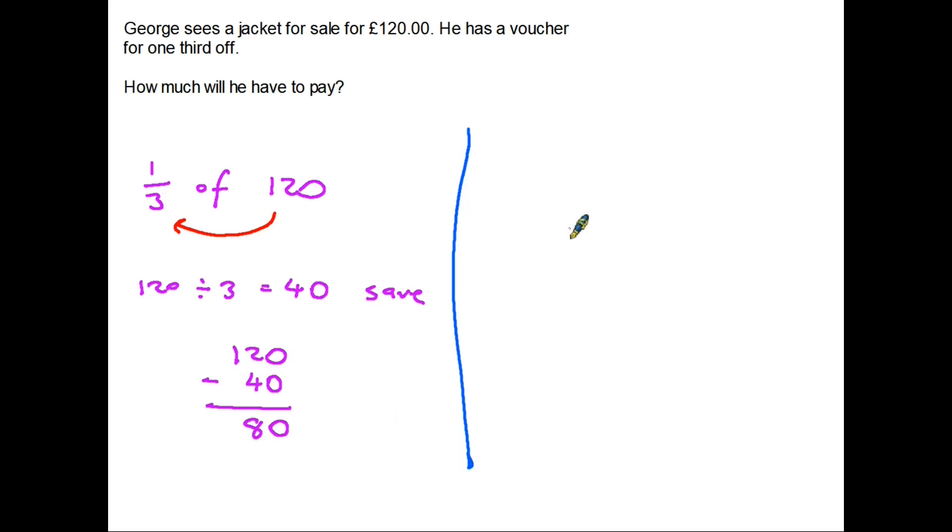Now another way of looking at this question is if you were to consider that he's going to take one-third off, then that means he's actually going to have to pay the other two-thirds. Because of course one-third and two-thirds is a whole one. So in this case we would be looking to find two-thirds of 120. So follow the golden rule again. 120 divided by three. So that's the same question as on the left hand side. 120 divided by three equals 40.